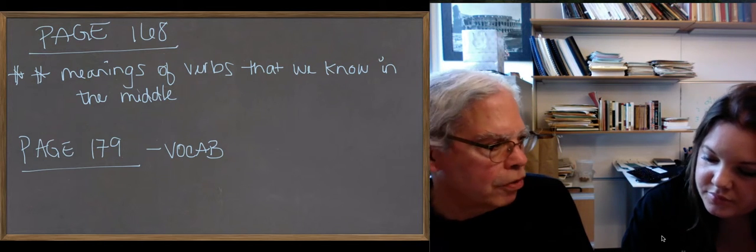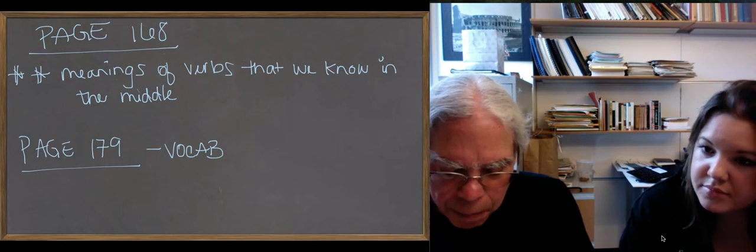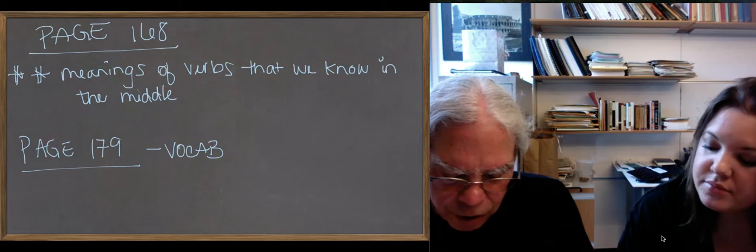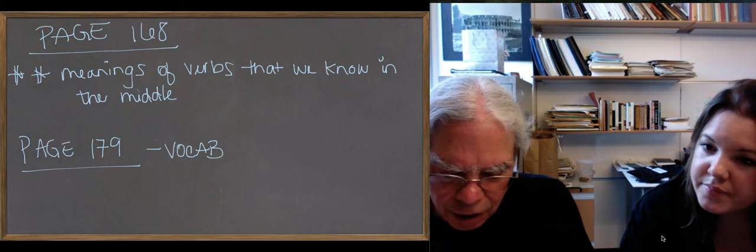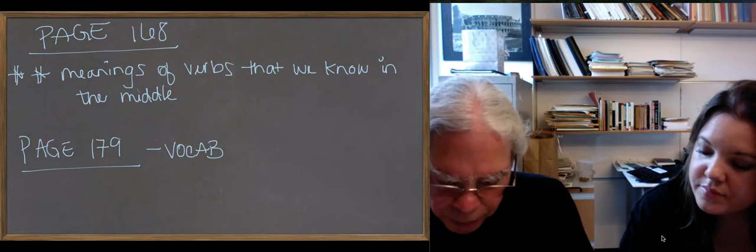So leipo is the present. Leipso, with a s-suffix, is the future, as you'd expect. Elipon, without the e or the o, is the strong aorist. Notice the ending -on. It's not a sigma aorist.